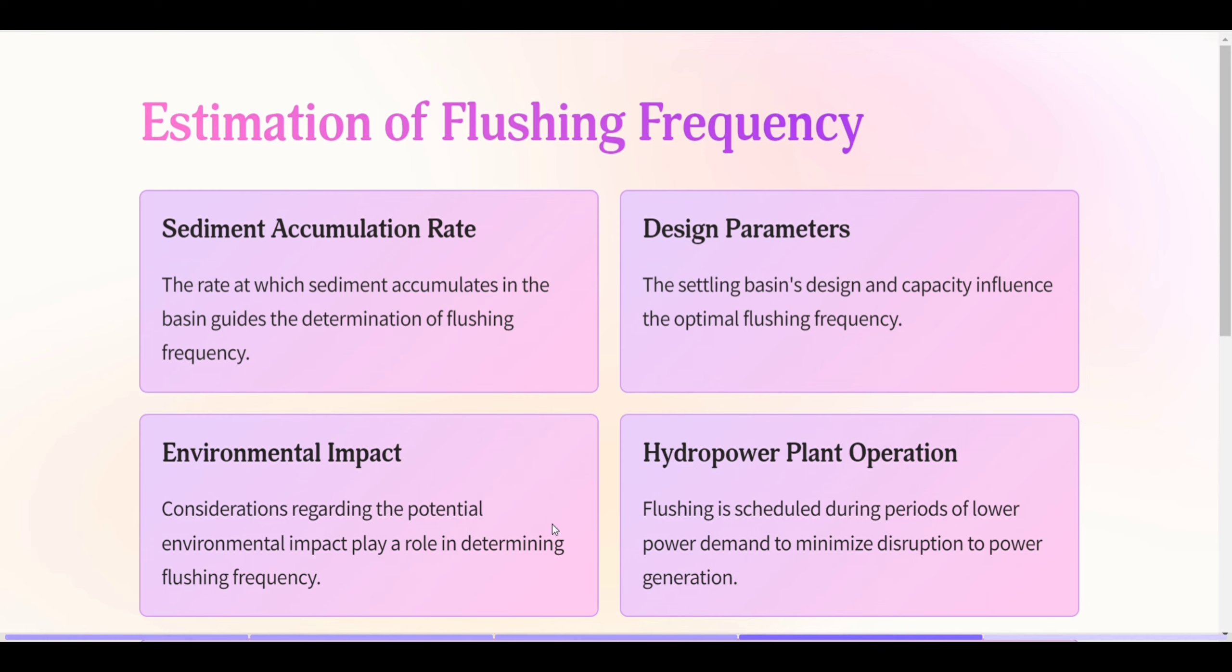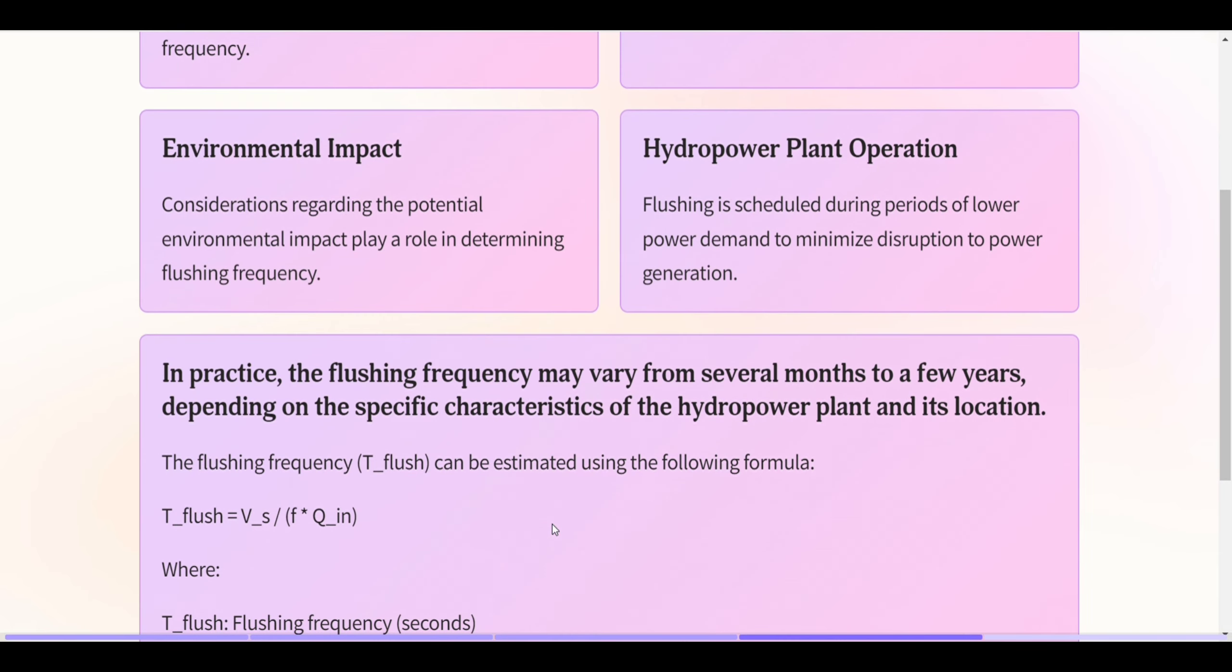Environmental Impact: Considerations regarding the potential environmental impact play a role in determining flushing frequency. Hydropower Plant Operation: Flushing is scheduled during periods of lower power demand to minimize disruption to power generation.